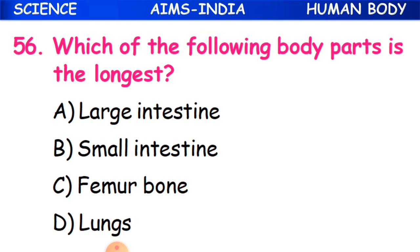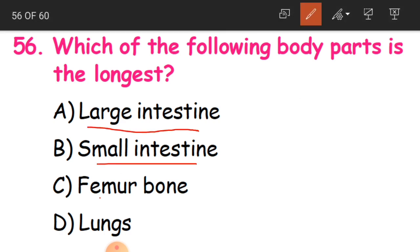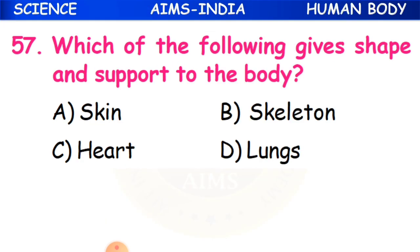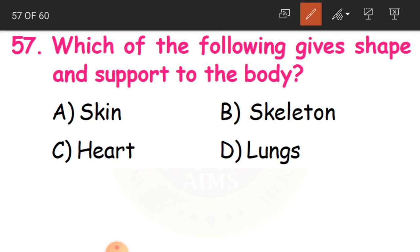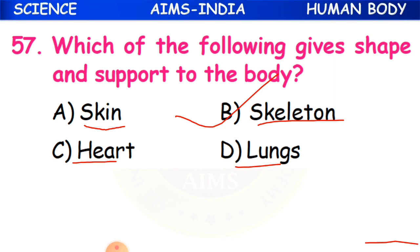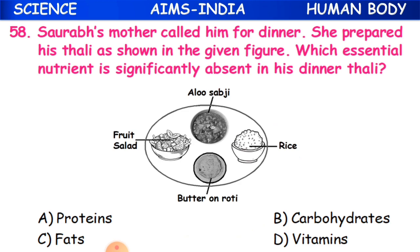Question 56: Which of the following body parts is the longest? The options are large intestine, small intestine, femur bone, or lungs. The answer is the small intestine. Question 57: Which of the following gives shape and support to the body? The answer is skeleton - option B.